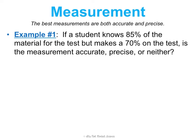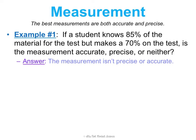Here's a more practical example with actual numbers. A student knows 85% of the material for a test but makes a 70% on the test. Is this test — the measurement of their knowledge — accurate, precise, or neither? It's not precise because it's not very specific; it's just a 70%. We don't have consecutive measurements to check consistency, and it doesn't have a decimal so it could have been more precise. It's also not accurate — if the student really knows 85% of the material, they should make an 85% on the test.